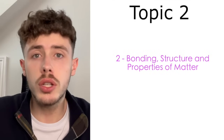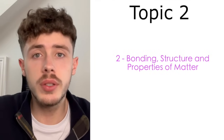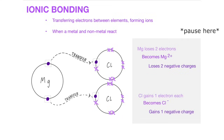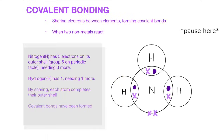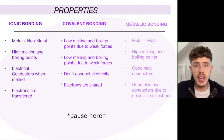Topic number 2: bonding, structure, and properties of matter. There are three main types of bonding: ionic bonding, covalent bonding, and metallic bonding. Here is a table comparing all three of those simultaneously.